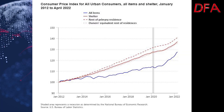Shelter costs are the largest regular expense for most households, making it a topic of considerable interest for users of consumer price index data. The US city average for shelter increased 5.1% from April 2021 to April 2022. Its two main components, owners' equivalent rent and rent of primary residences, each increased 4.8% over the year. Lodging away from home rose 19.7% over the same period.